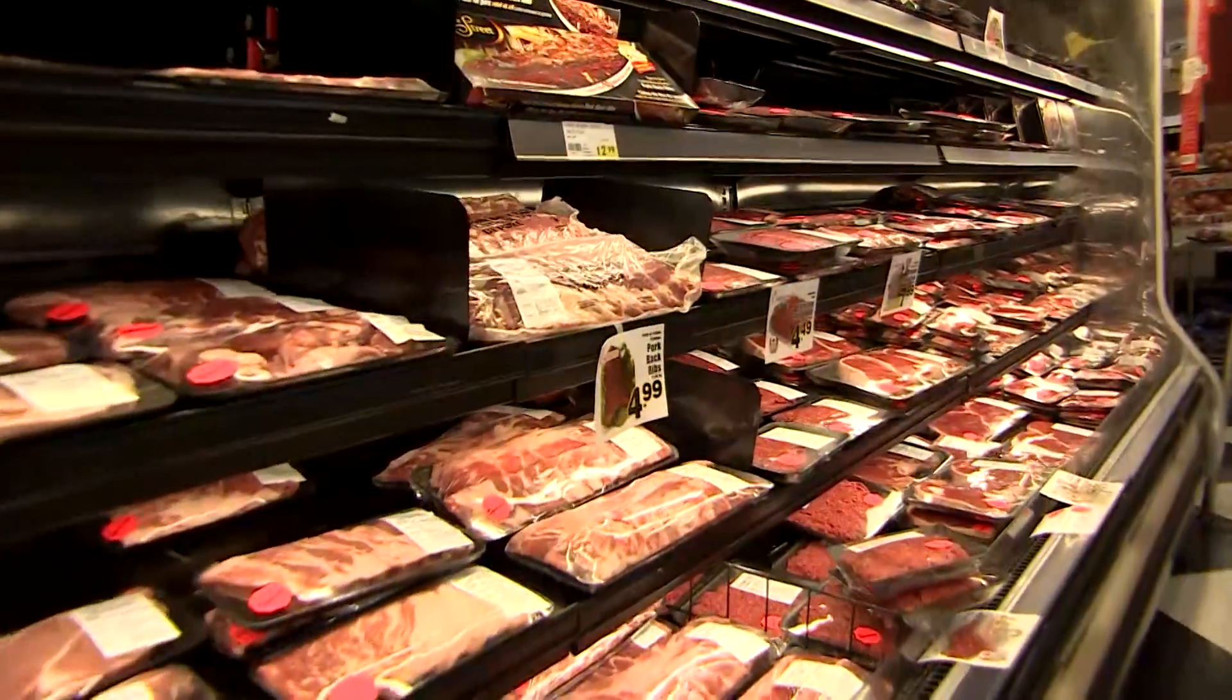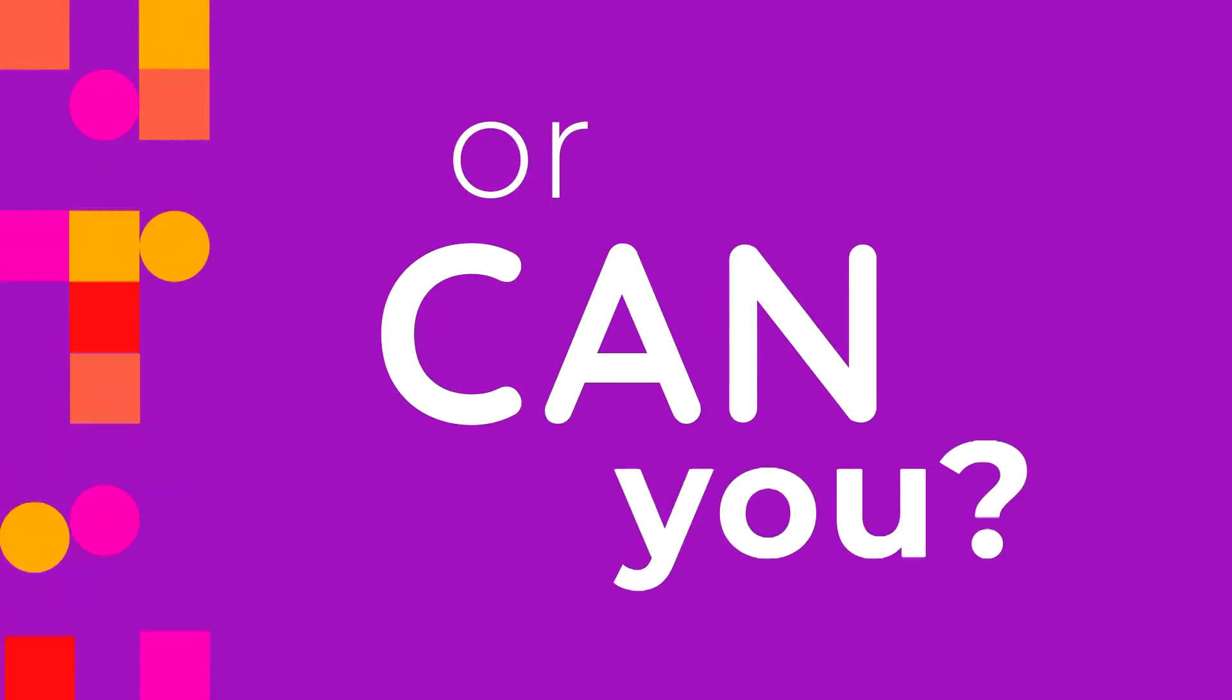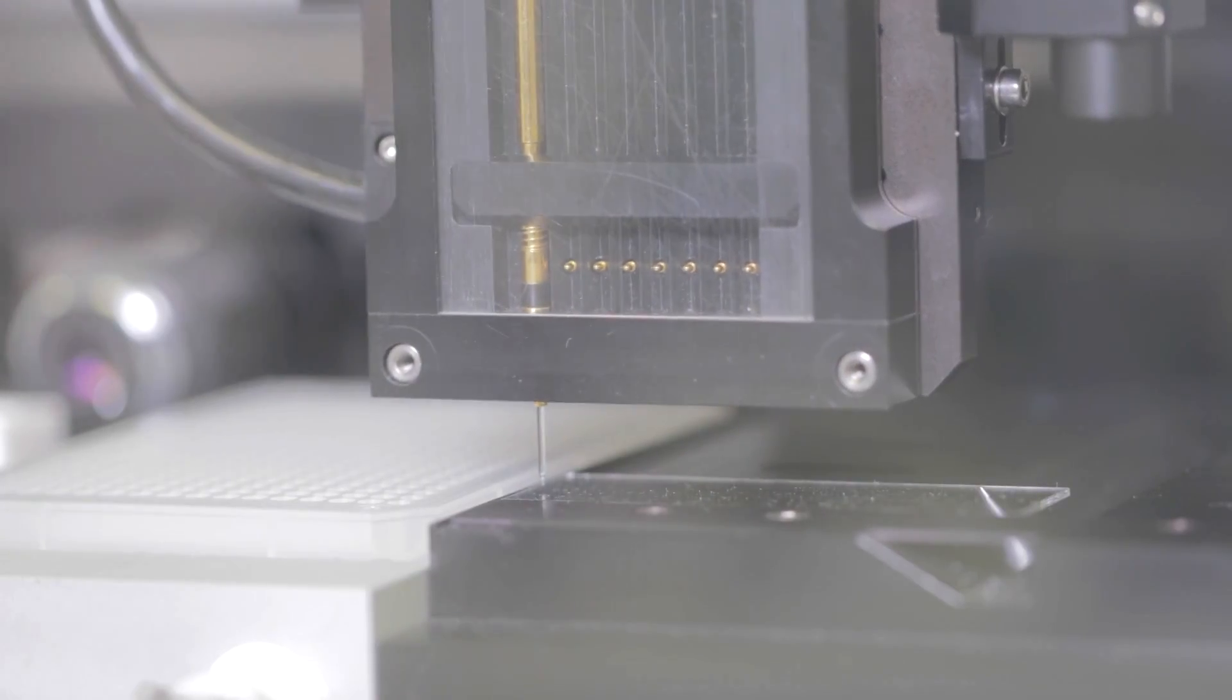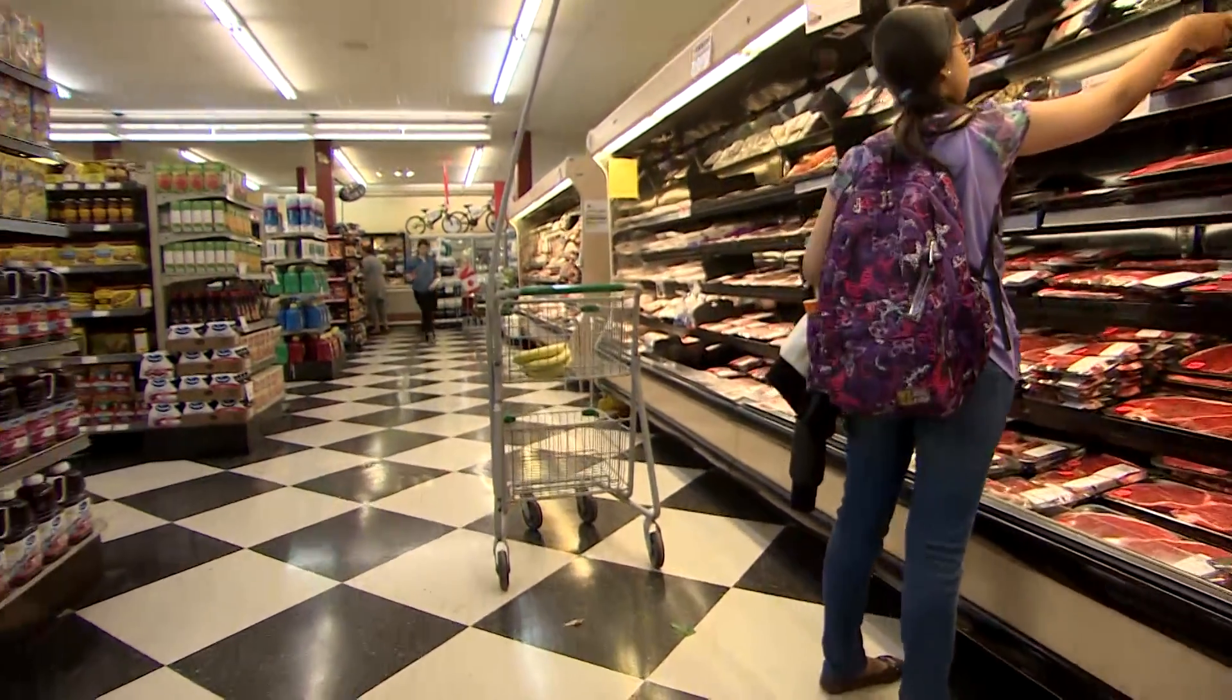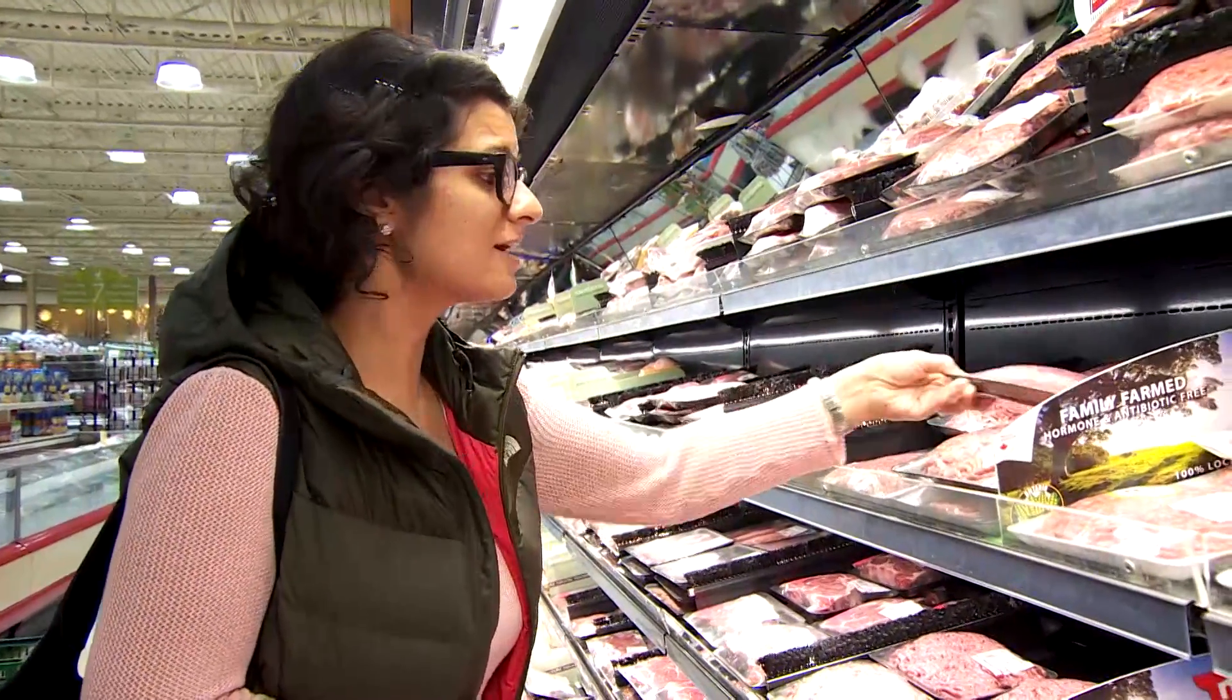You can't tell if meat is contaminated with deadly bacteria just by looking at it. Or can you? A new Canadian invention means one day shoppers could tell if meat is safe to eat just by scanning the package with their smartphones.